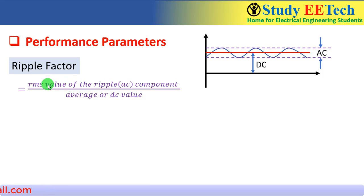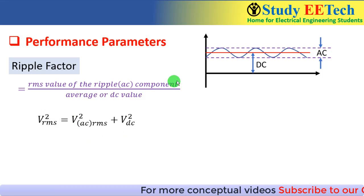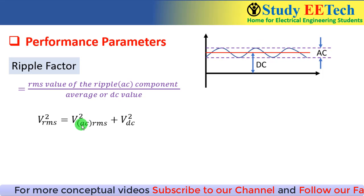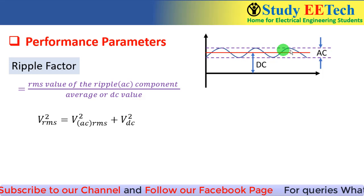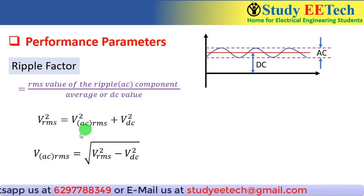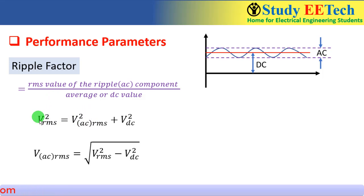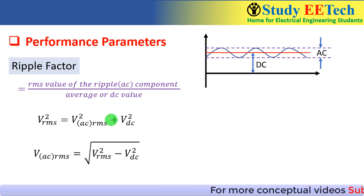The question is how we can calculate the RMS value of the ripple or AC component. The whole waveform is one thing and the ripple part is within it. We take the help of the expression: V_RMS is the RMS value of the whole waveform, and V_AC_RMS is the RMS value of the AC component. So we can write: V_RMS² = V_AC_RMS² + V_DC². Directly we cannot calculate the RMS value of the ripple component, but we know the RMS value of the complete waveform and the DC value, so from this equation we can find V_AC_RMS.